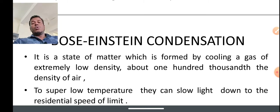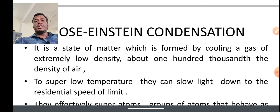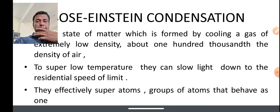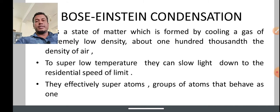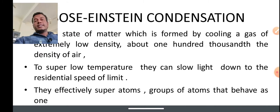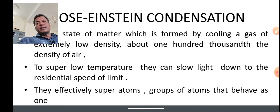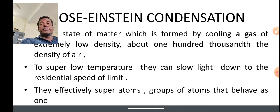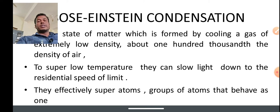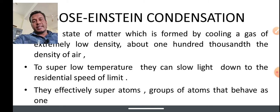They have the property to slow down light velocity to the speed limit. This effectively creates super atoms, groups of atoms that behave as one. This is called Bose-Einstein condensations. When you cool solids to very low temperature, effectively all atoms, groups of atoms behave as one. Very lowest temperature which reduces the speed limit is called Bose-Einstein condensations.